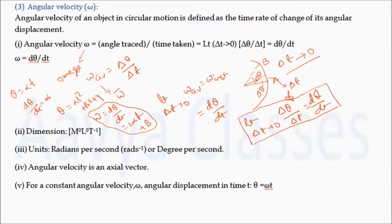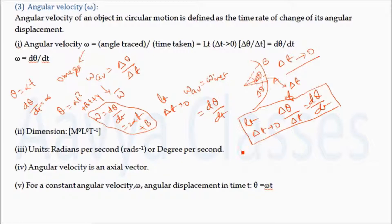Now, what are the dimensions and units of angular velocity? Its unit is radian per second or degree per second. The dimension is equal to T inverse. Angular velocity is a vector quantity, meaning it has both magnitude and direction.